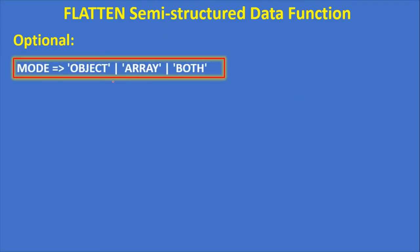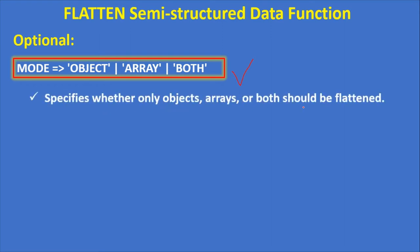The mode parameter can be object, array, or both — specifying whether only objects, only arrays, or both should be flattened. In JSON, an object is key-value pairs and an array is one value having multiple values. Even in a JSON document you can have an array within an array. The default is both, because a JSON document could be a mix of objects and arrays.